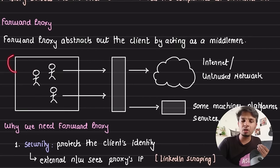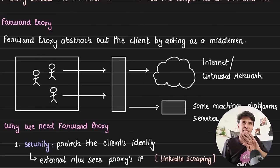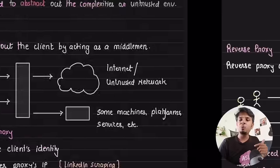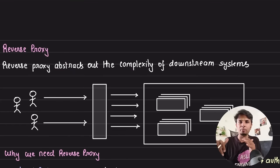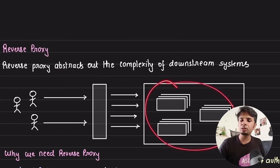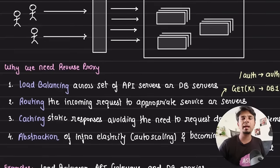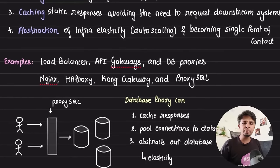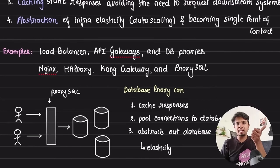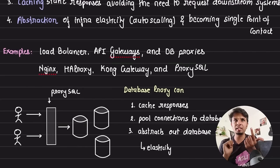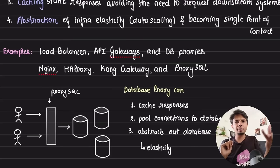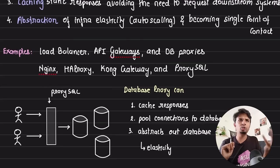To compare: the forward proxy abstracts out the clients from the downstream systems — the box is placed on the client side, so the other side sees only a single entity. The reverse proxy is the complete opposite — it abstracts out the complexities of the downstream systems. Practical examples include load balancers, API gateways that route requests to the corresponding microservice, and database proxies. Tools like Nginx and HAProxy act as load balancers; Kong Gateway is a great API gateway example.